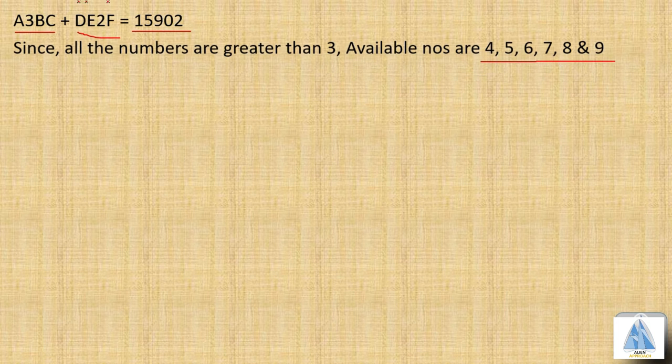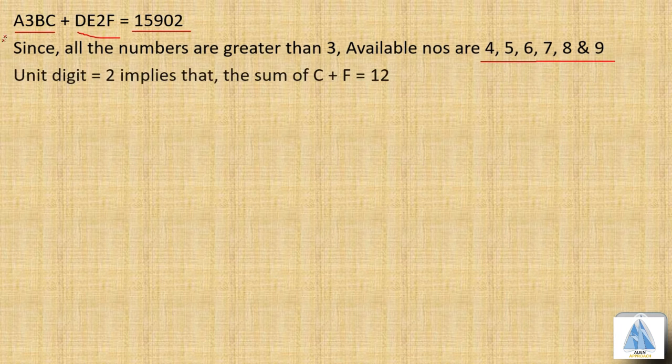Since the unit digit is 2 and all numbers are greater than 2, that implies the sum of C + F equals 12. The tens digit can be found using the expression B + 2 + 1 (carried from the 12).